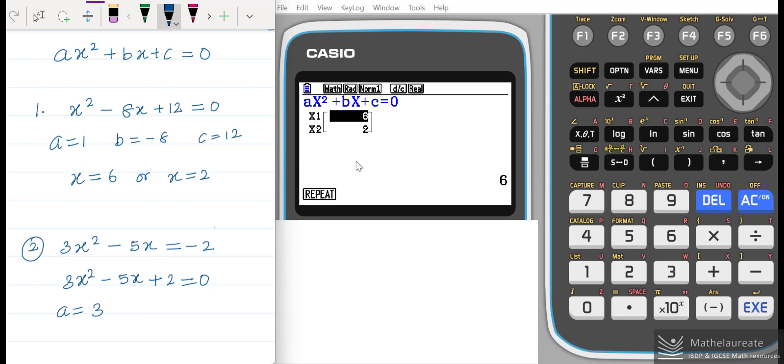In this, a is 3, b is minus 5, and c is 2.